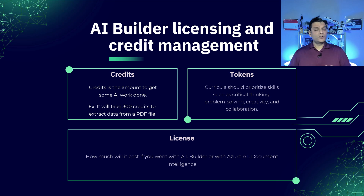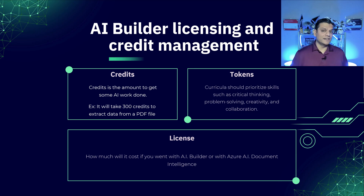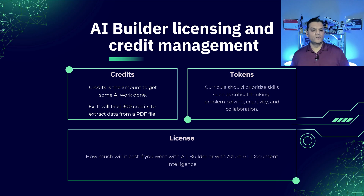Now let's talk about tokens. The two are kind of the same and yet different. When you use AI Builder — the low-code way — we focus on credit consumption. However, it takes a certain number of tokens to actually build a credit. Tokens give you the exact amount of consumption for any AI task you're performing, and then a certain number of tokens will add up to create a credit.